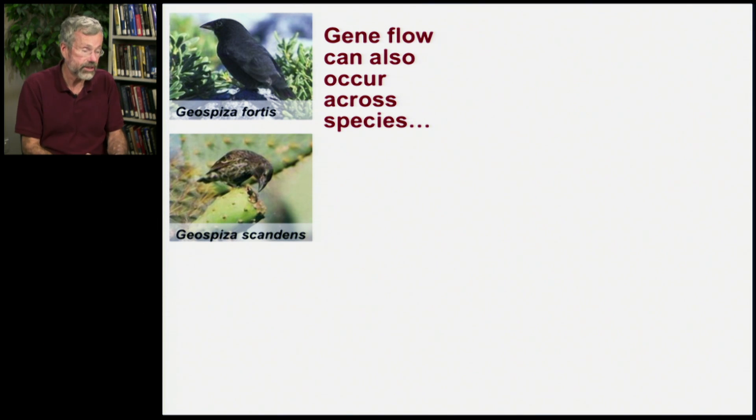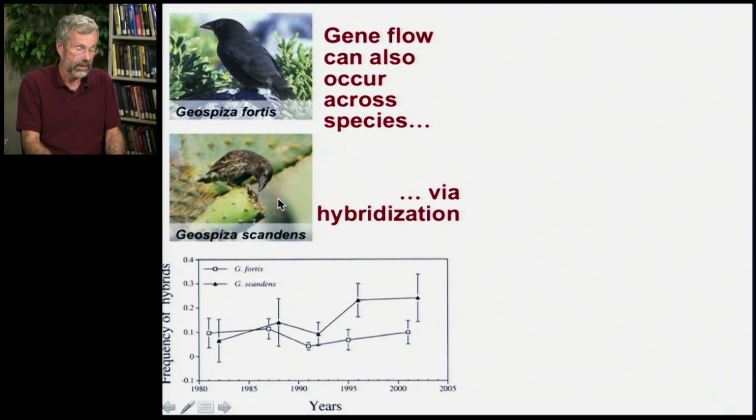Now I've already seen Geospiza fortis in the Galapagos. That's one of Darwin's finches. That's the one that its beak size changed during the drought. But on those islands in the Galapagos, it coexists with another species called Geospiza scandens.